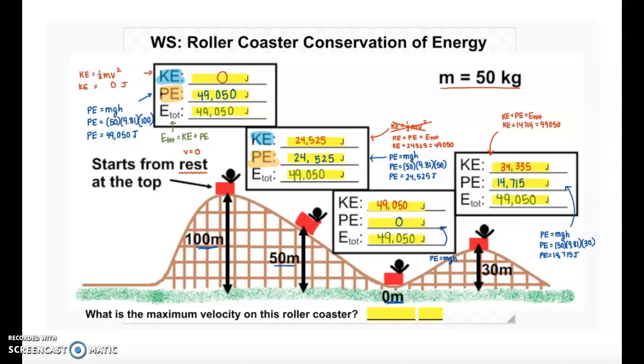We have one last question to answer. It says, what is the maximum velocity of this roller coaster? Taking a look at the roller coaster itself, I'm looking for the maximum velocity, which means I'm looking for where the kinetic energy is maximum. The fastest that you can go will produce the biggest amount of kinetic energy, and the biggest kinetic energy happens right here at the very bottom of the hill.